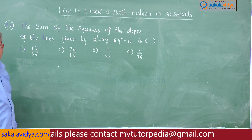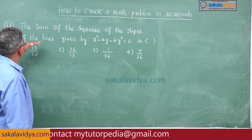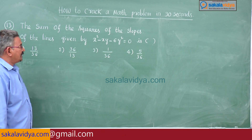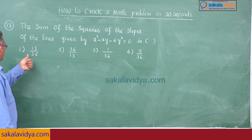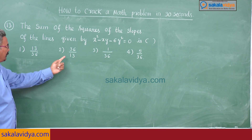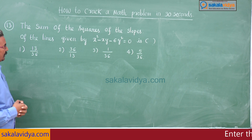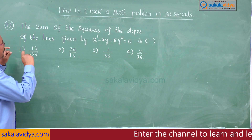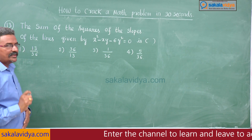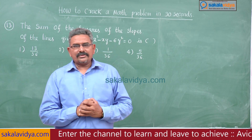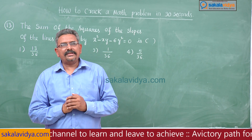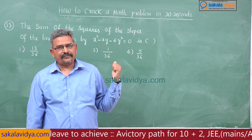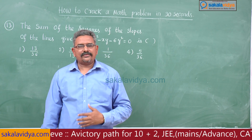Problem 13: The sum of the squares of the slopes of the lines given by x² - xy - 6y² = 0 is — first option 13 by 36, second option 36 by 13, third option 1 by 36, fourth option 5 by 36. The keyword here is 'sum of the squares of the slopes', so if m₁ and m₂ are the slopes, we need to find m₁² + m₂².